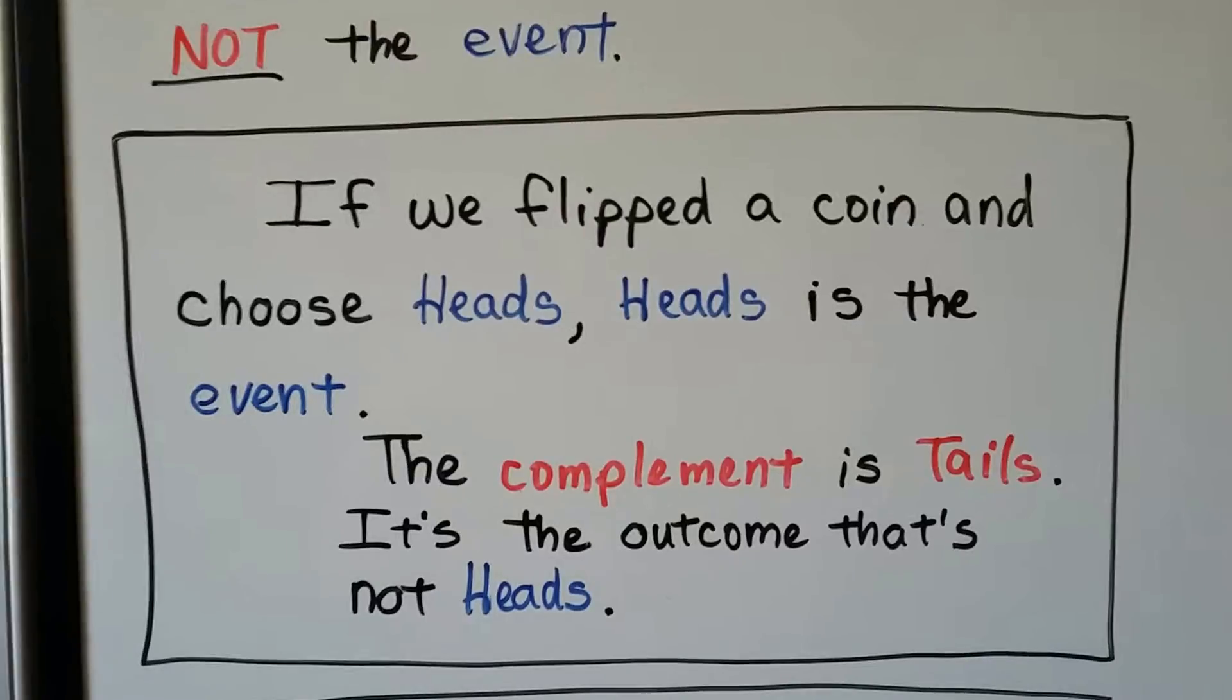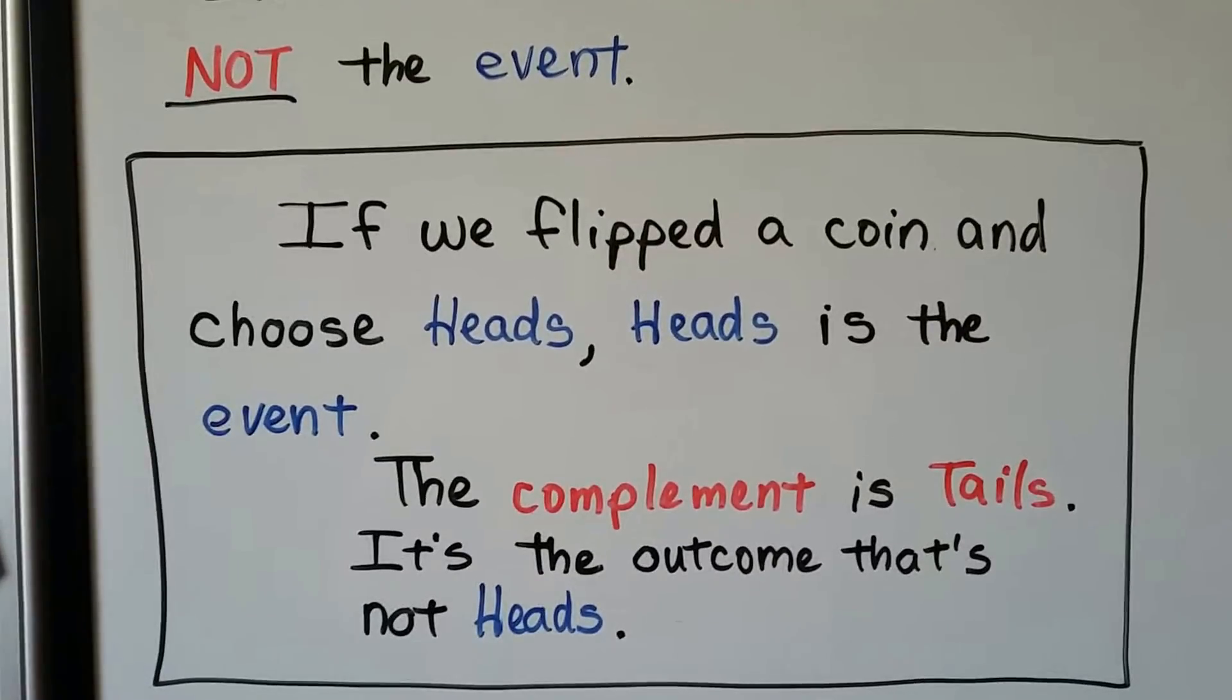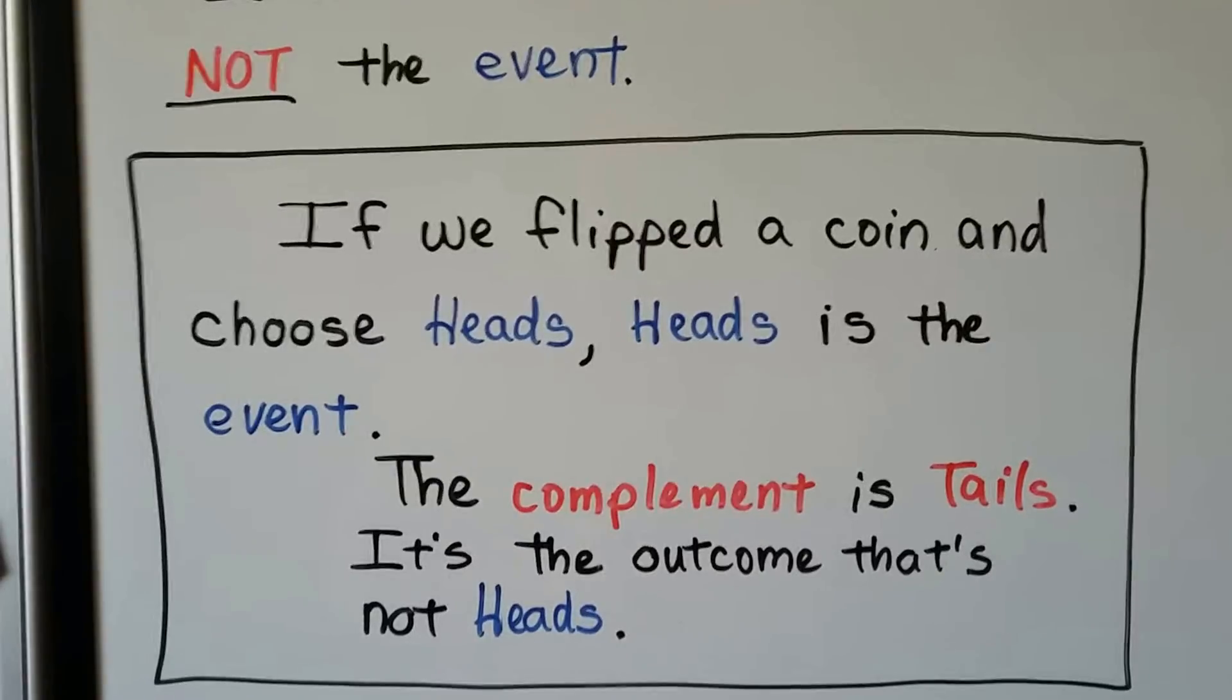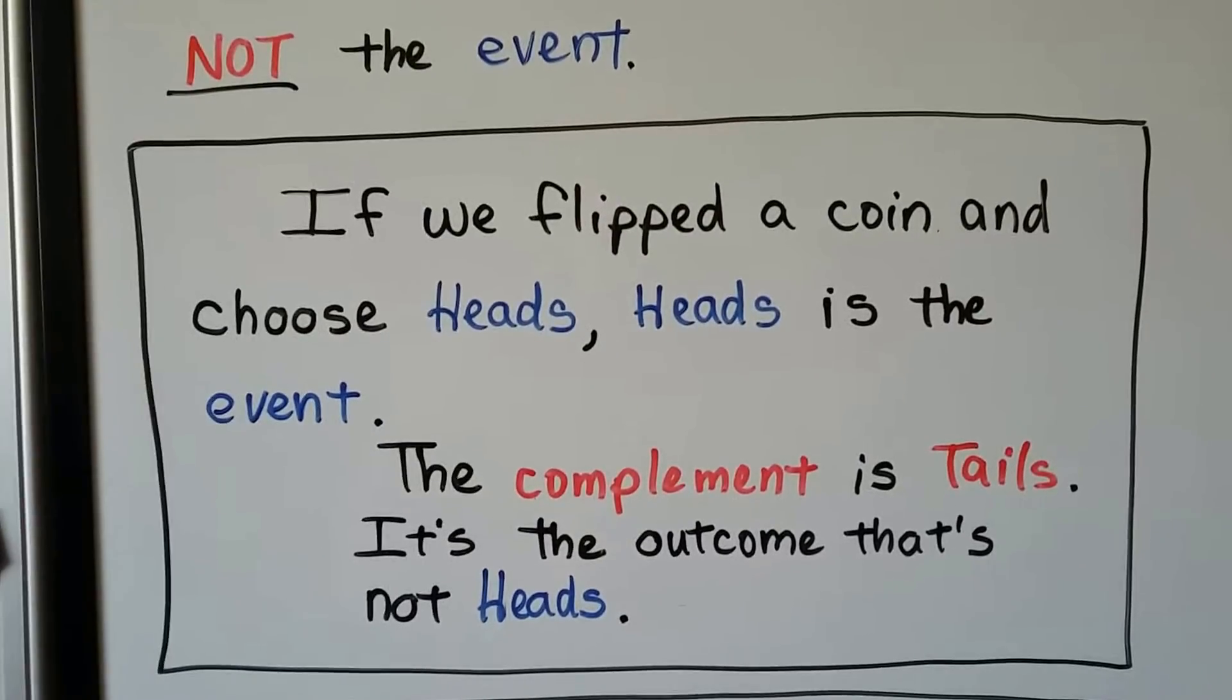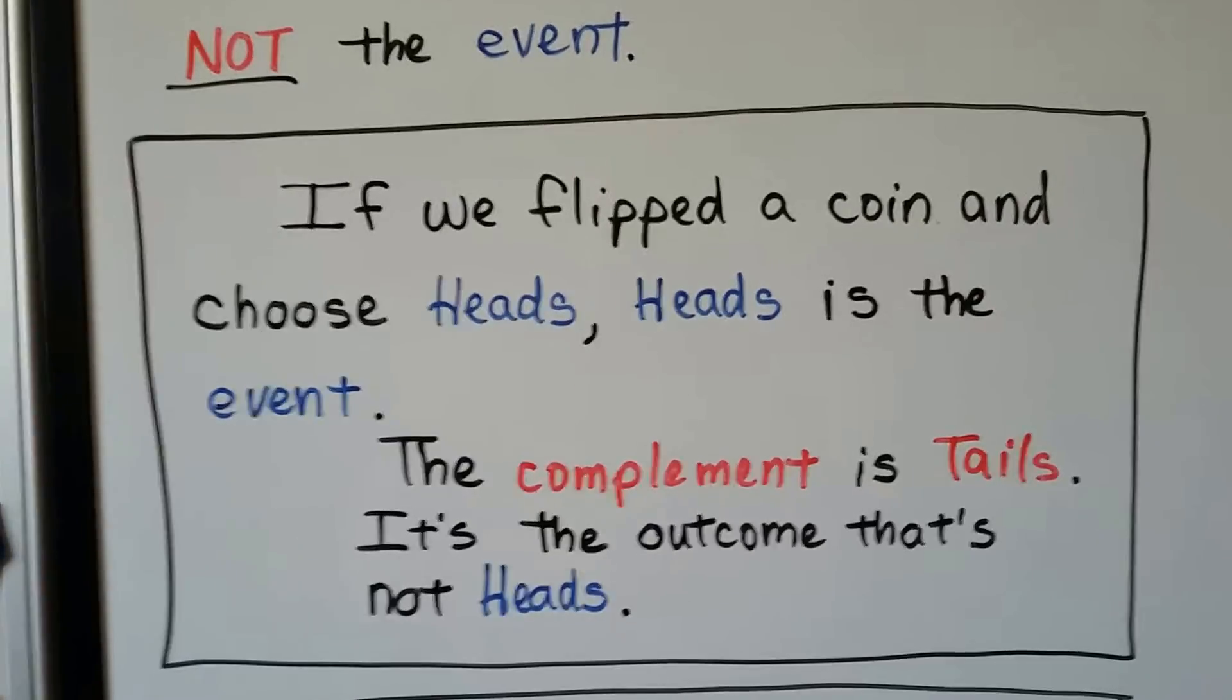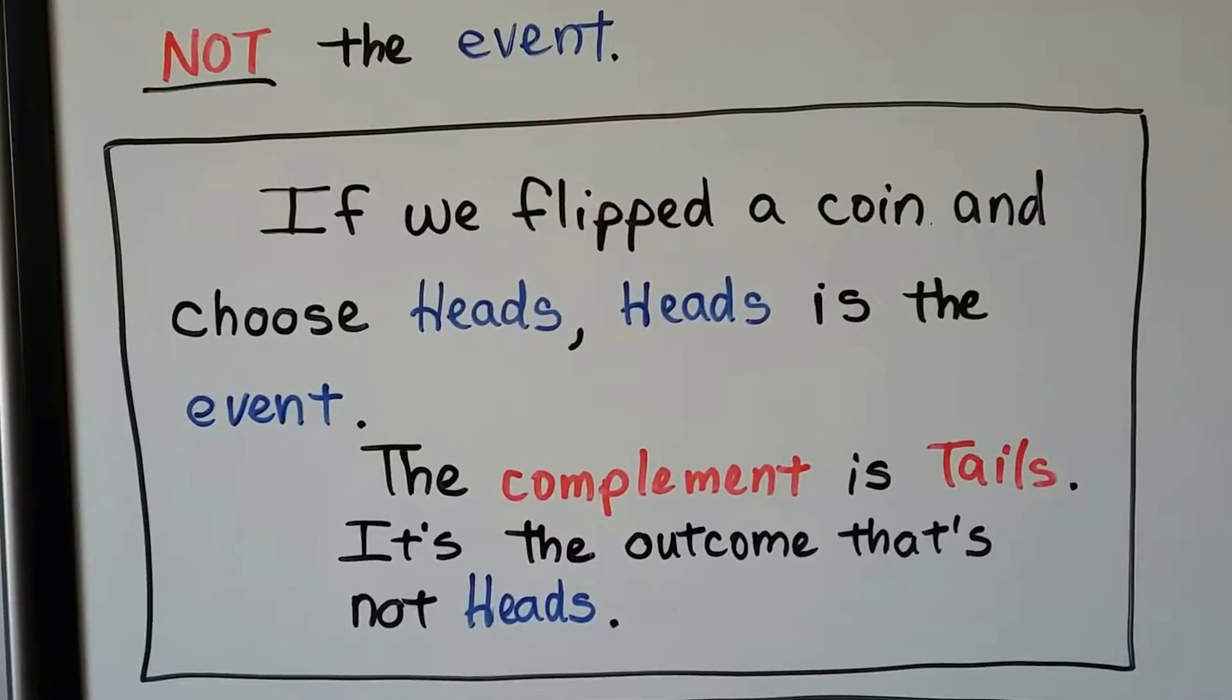If we flipped a coin and choose heads, heads is the event. It's what we want to happen. The complement is tails. It's the outcome that's not heads. The complement is the outcome we don't want to happen.